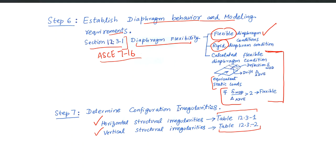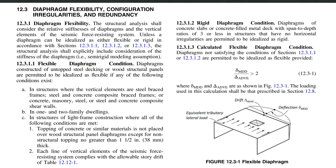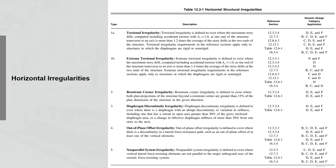Some of the irregularities in these tables can be directly observed from your structural geometry to check whether they exist or not. But for some irregularity types, you have to perform the analysis first to confirm the irregularity exists. Regarding diaphragm flexibility, either you go for flexible if any of the code conditions are fulfilled, otherwise you go for rigid. These are the two tables for irregularities: Table 12.3-1 for horizontal and Table 12.3-2 for vertical structural irregularities.